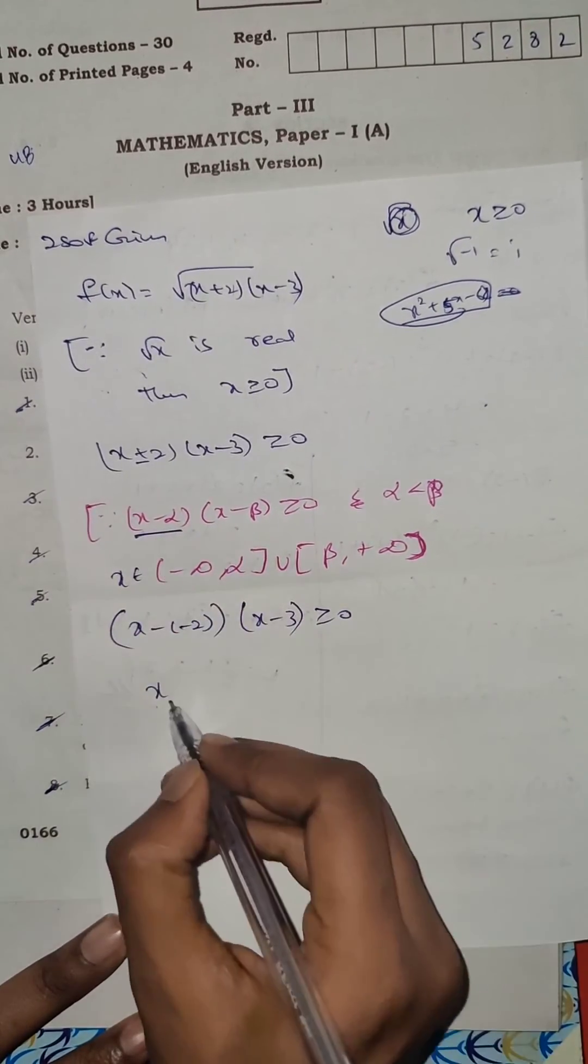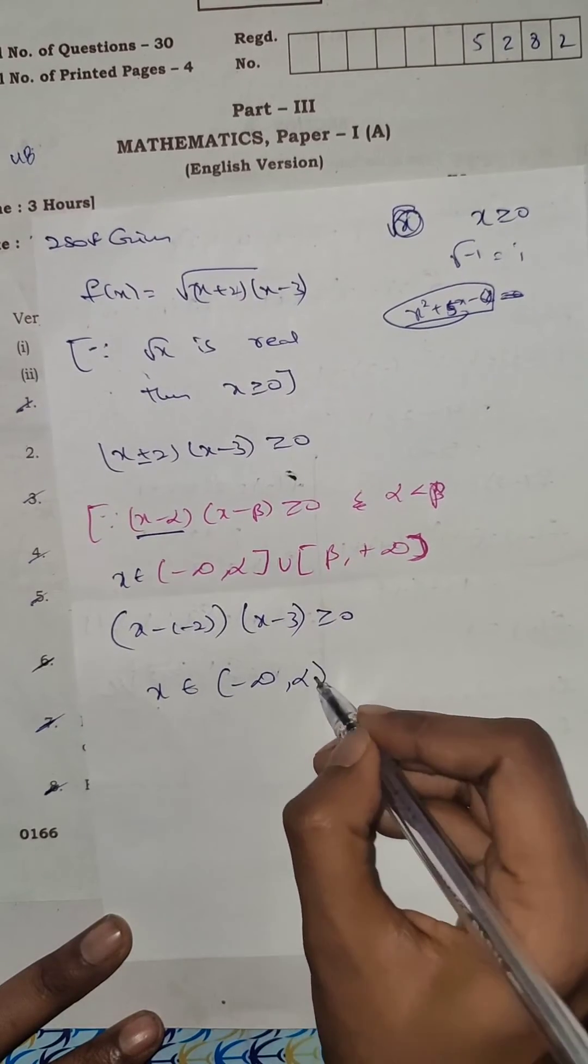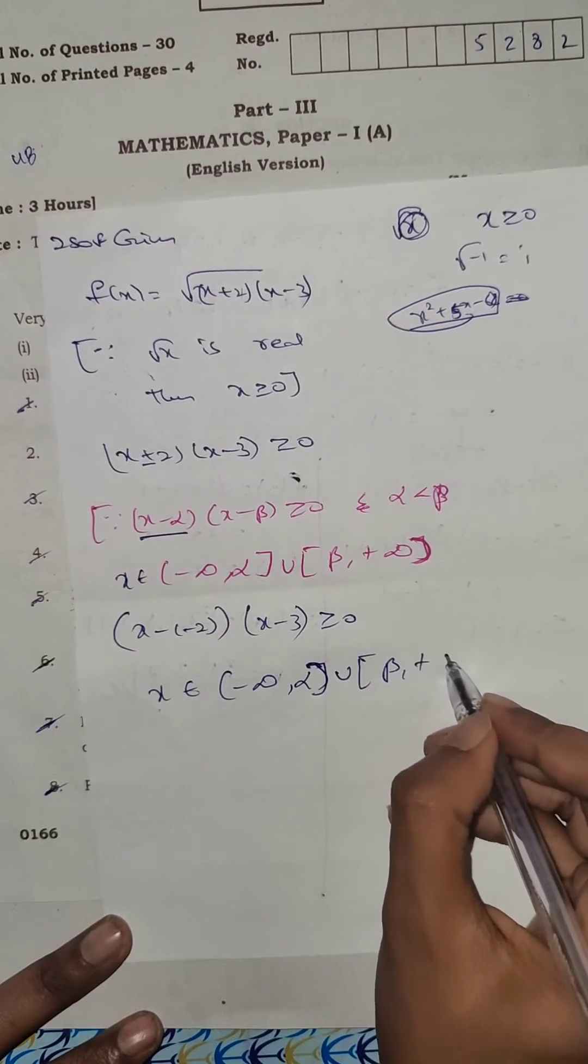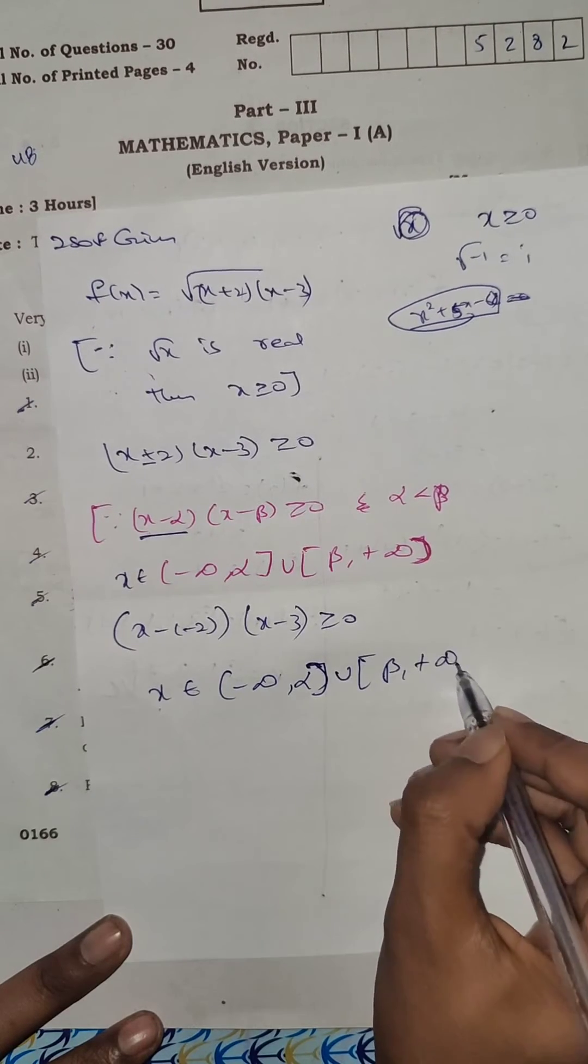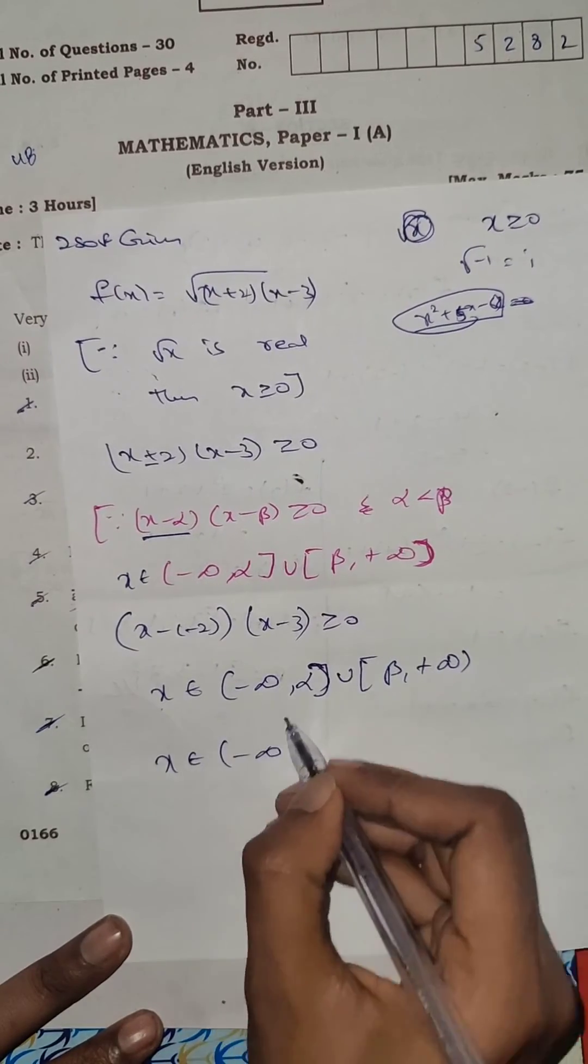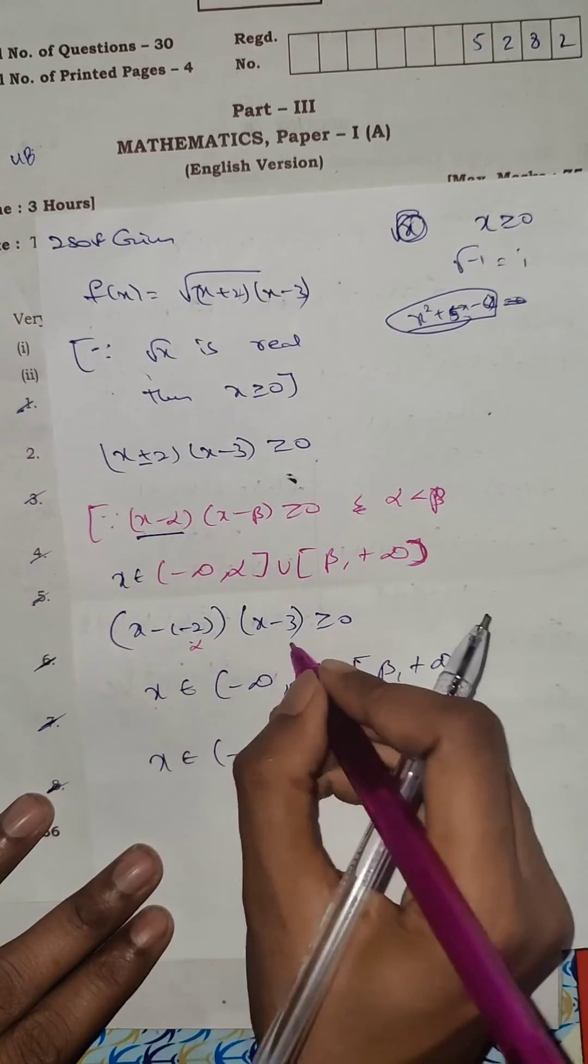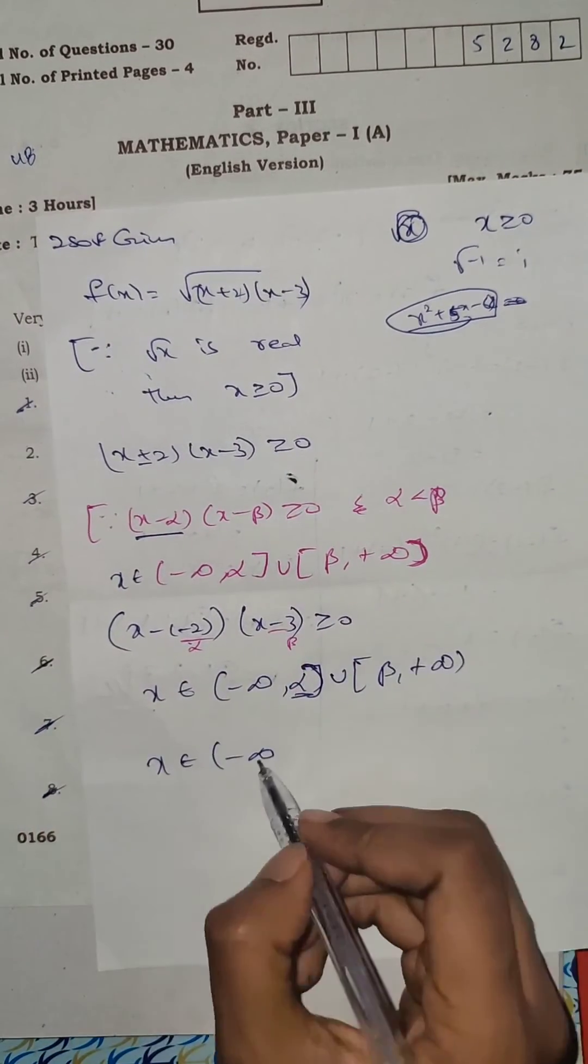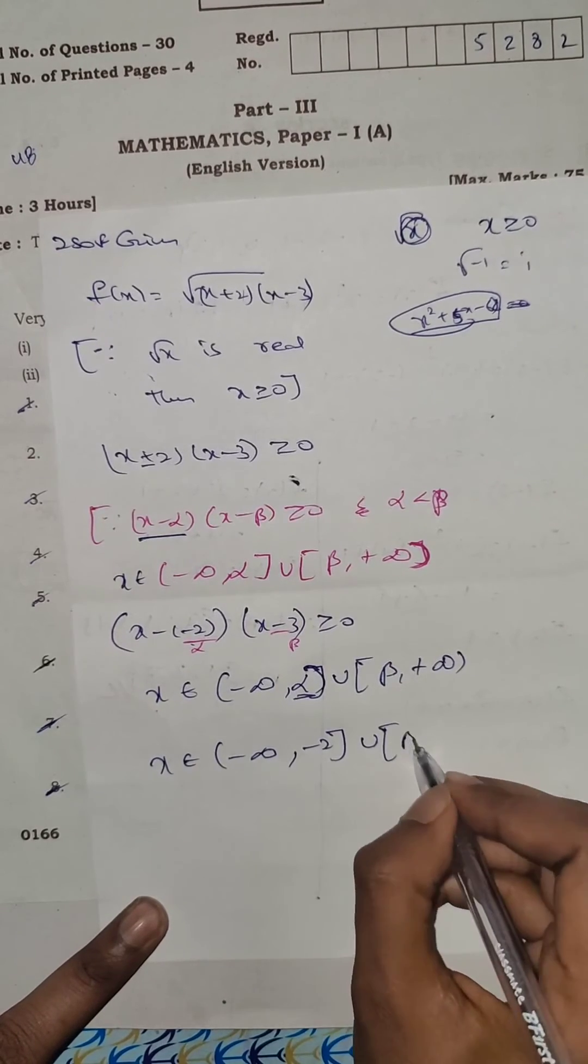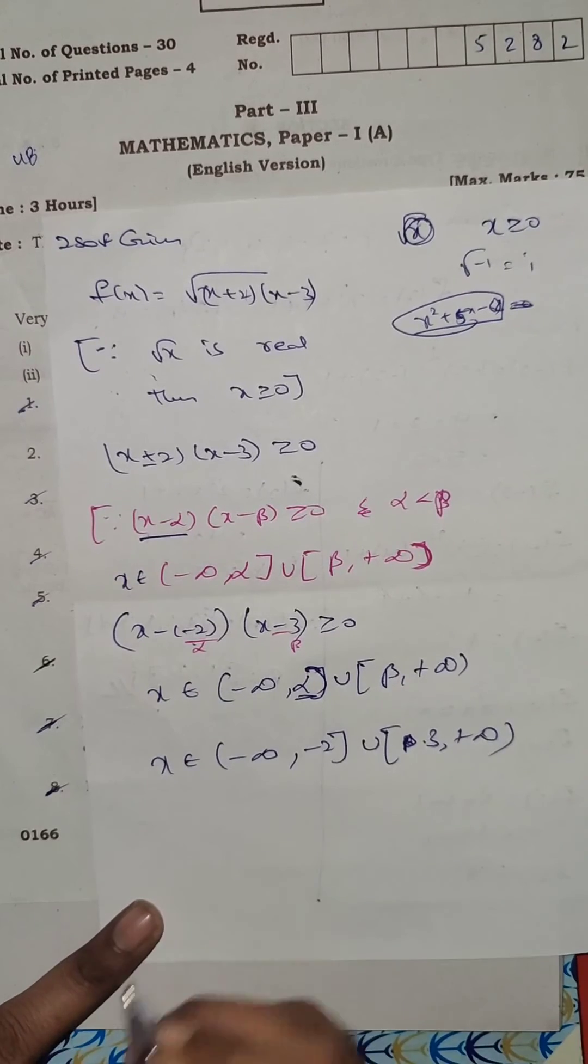Now, this is x belongs to. x belongs to minus infinity, alpha, union, beta, plus infinity. We have x belongs to minus infinity. Alpha is a constant. This is alpha. This is beta. So, minus 2, union, beta and 3, comma, plus infinity.